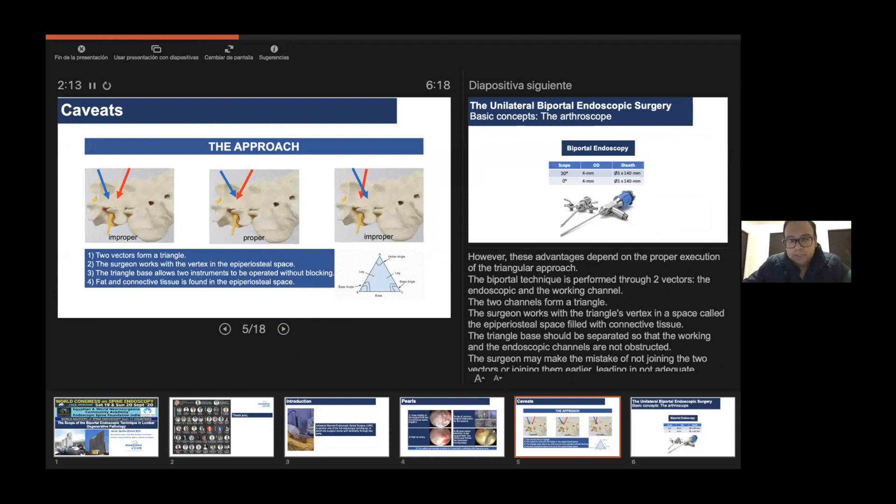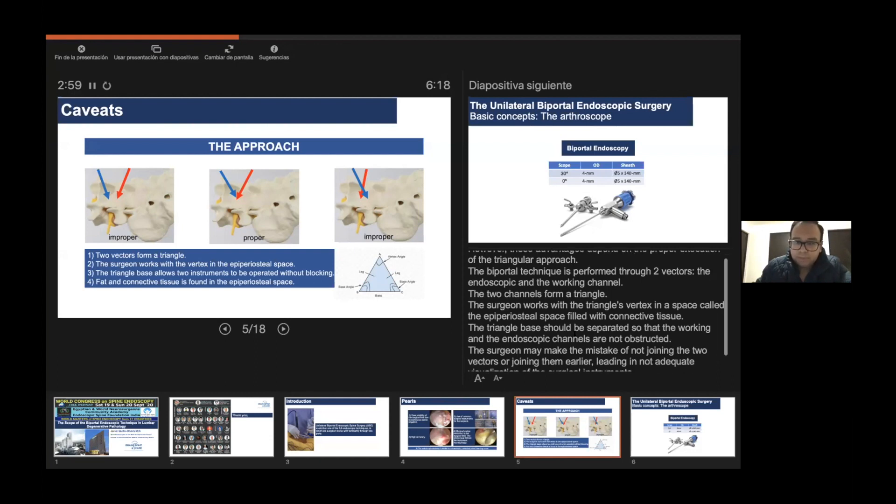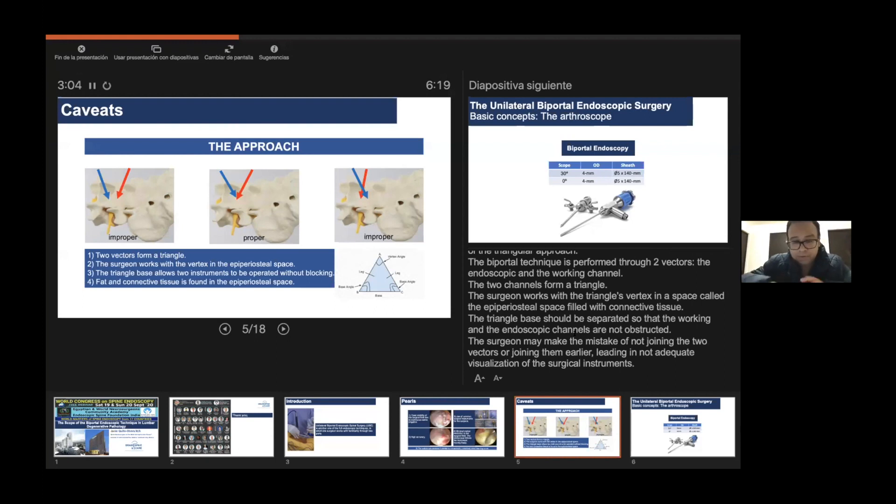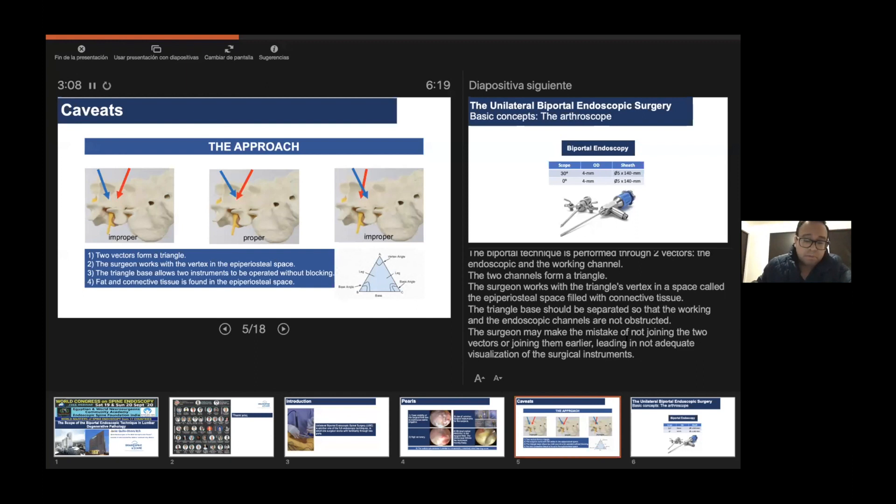But this advantage depends on proper execution of the triangular approach. The biportal technique is performed through two vectors: one is the endoscopic channel and the other is the working channel. The two channels form a triangle and the surgeon works with the vertex of this triangle in a space called epiperiosteal space. This space is filled with connective tissue or fat tissue. The surgeon works precisely below the muscles, not through or into the muscles, so muscle damage is minimal similar to uniportal techniques. But the triangle base should be separated to ensure that the surgeons are not blocking during the surgery with the two instruments.